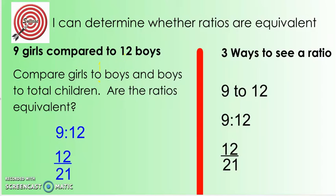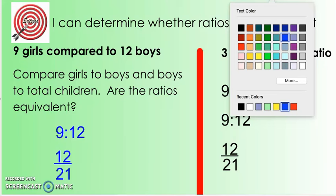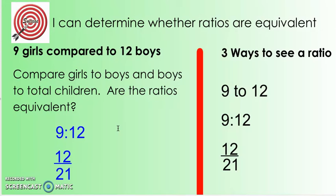And so looking at this, we need to determine is 9 to 12, not 9 twelfths, but 9 to 12, is that in simplest form first of all? And if not, we need to simplify it.